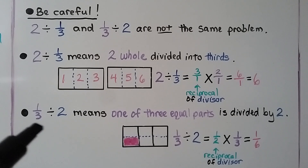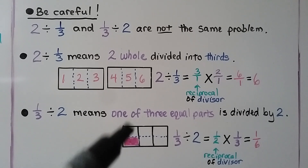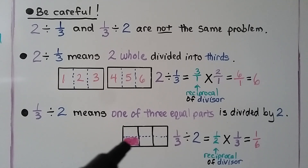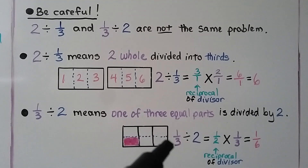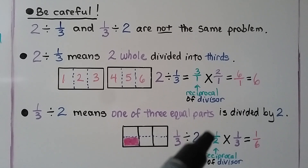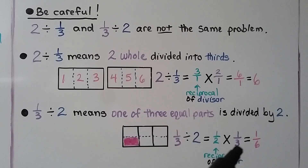1 third divided by 2 means we have 1 third of one rectangle divided into two parts — one of them would be 1 sixth of the whole rectangle. To solve 1 third divided by 2, we multiply by the reciprocal of the divisor 2, which is written as 2 over 1, so its reciprocal is 1 half. 1 times 1 is 1 for the numerators, and 2 times 3 is 6 for the denominator. We have 1 sixth.